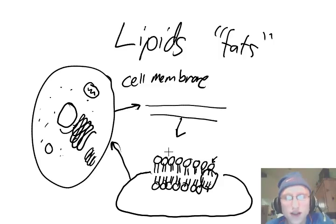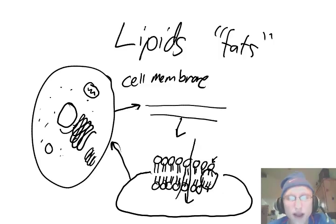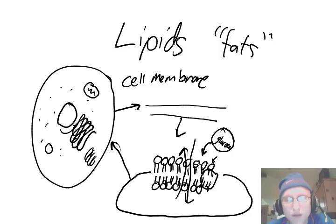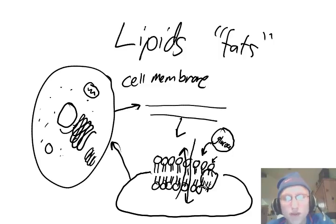This bilayer acts as a layer to let things in and out. Small things can get in and out, like gases and water. But large molecules — like a huge glucose molecule — can't get through unless they need help. So those fat molecules are an integral, important part of the cell membrane letting things in and out.